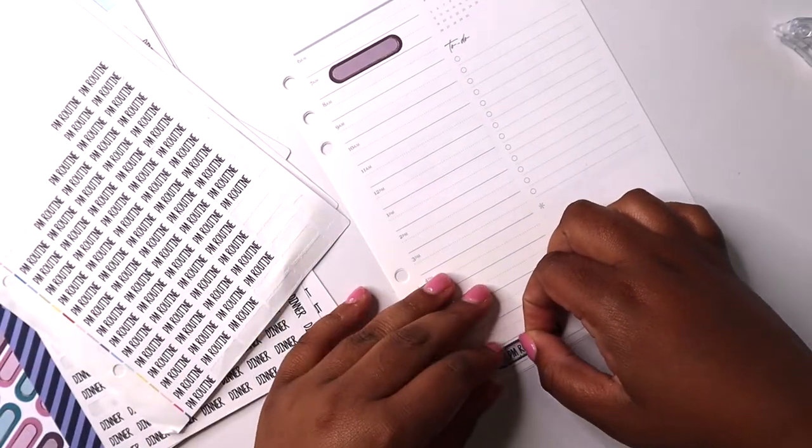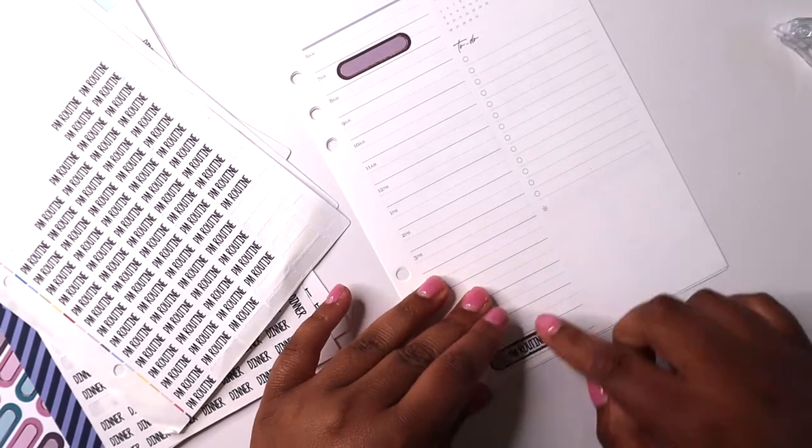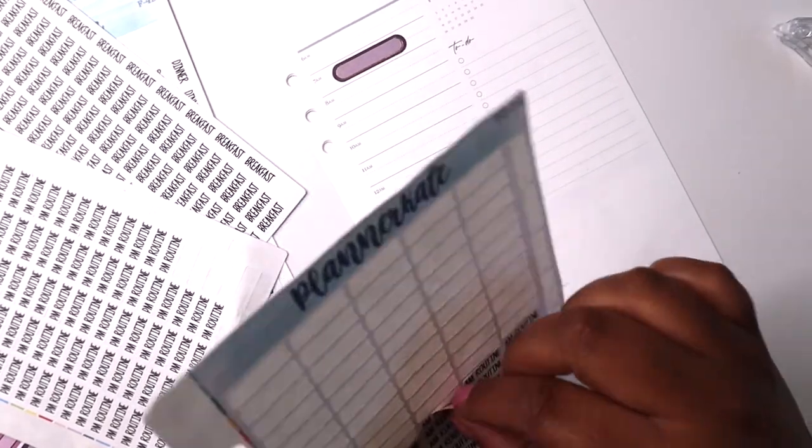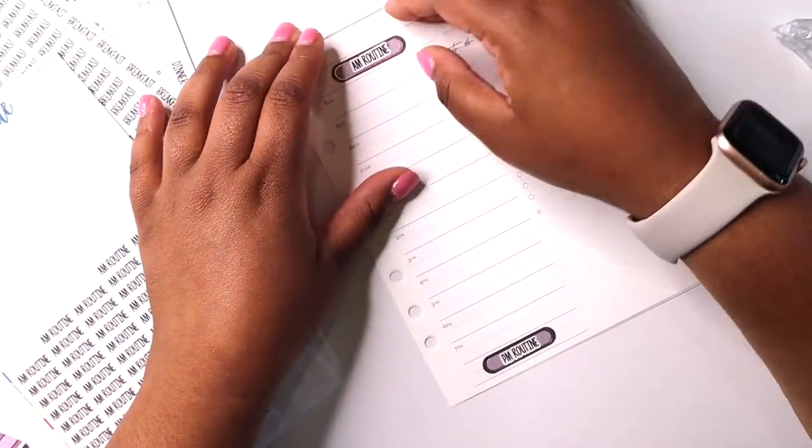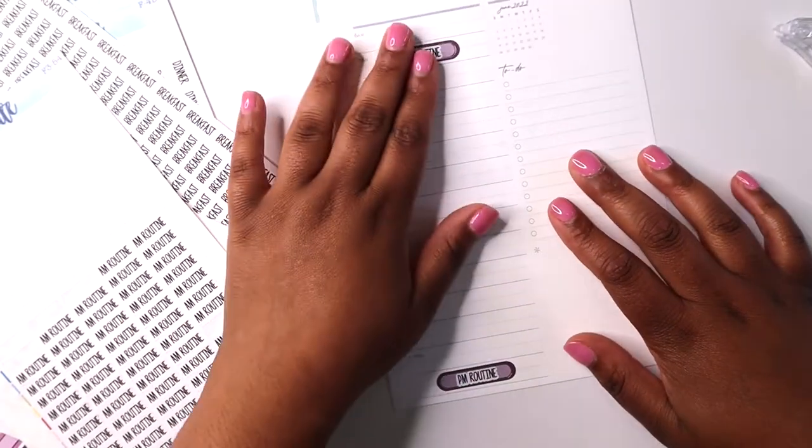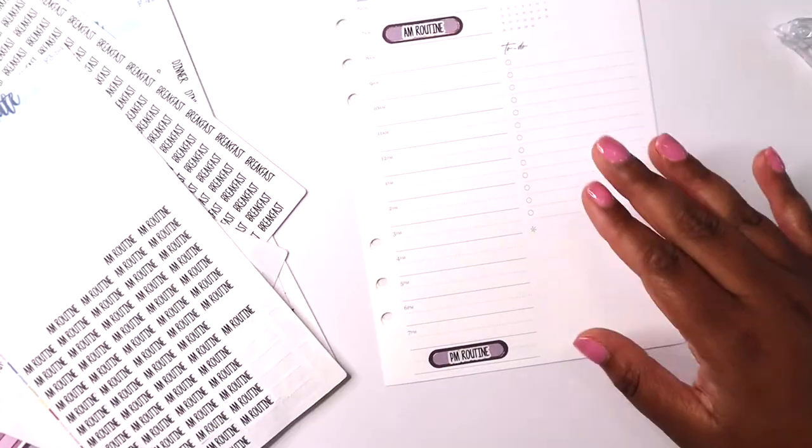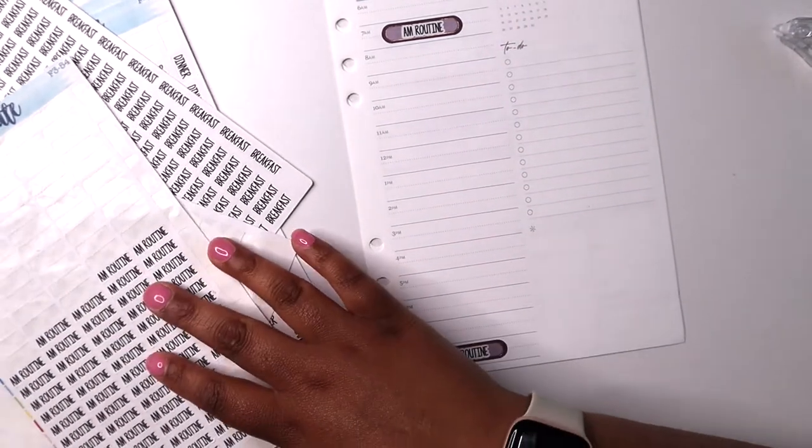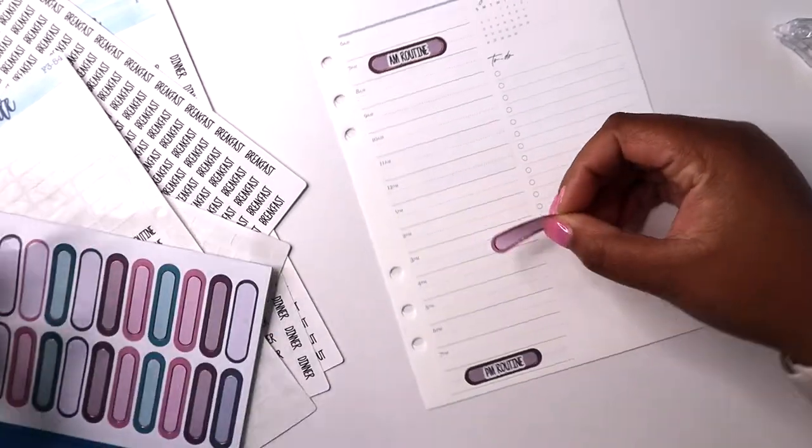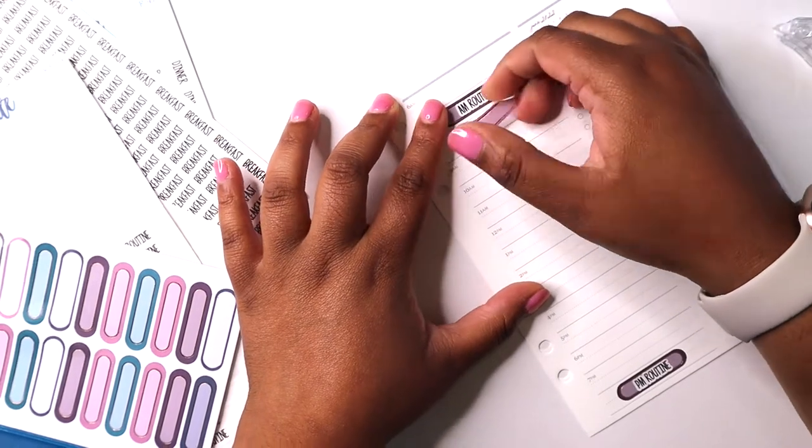These specific stickers are from the seasonal surprise box like I mentioned, so they're exclusive meaning you won't be able to purchase them on the website. But you can use any functional sticker if you're trying to mimic this spread. Okay, so AM routine and PM routine are in. I'm not going to mess around with filling in what those actually would be today, but I will go ahead and put in my meal times. I'm going to use these pink flags for that.